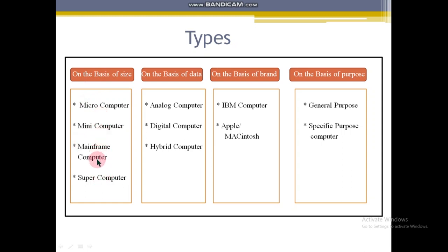The work and functions of micro, mini, mainframe, and supercomputers are all different. On the basis of data there are three types: analog, digital, and hybrid computers. On the basis of brand there are IBM, Apple, or Mac computers. On the basis of purpose there are two types: general purpose, which we commonly use, and specific purpose, which a specific person uses for specialized tasks.